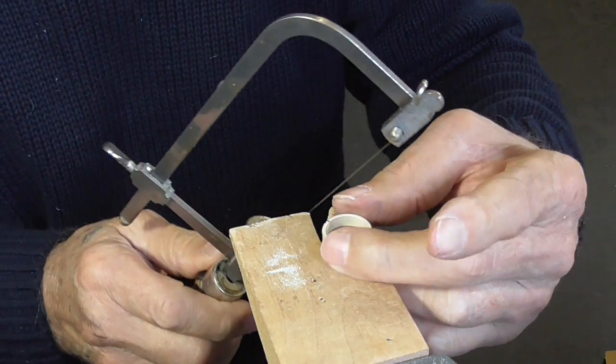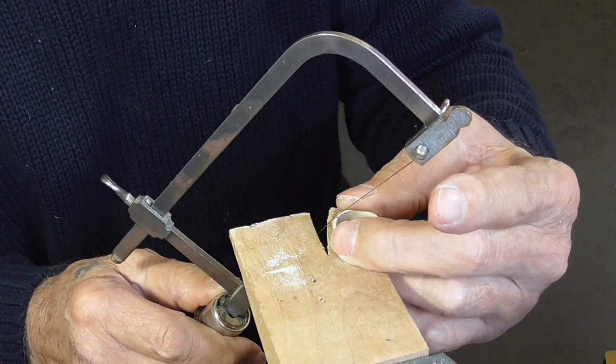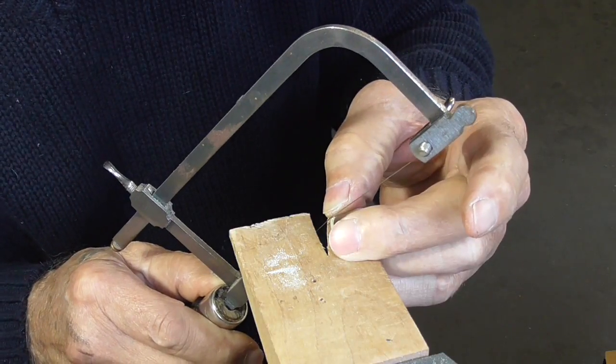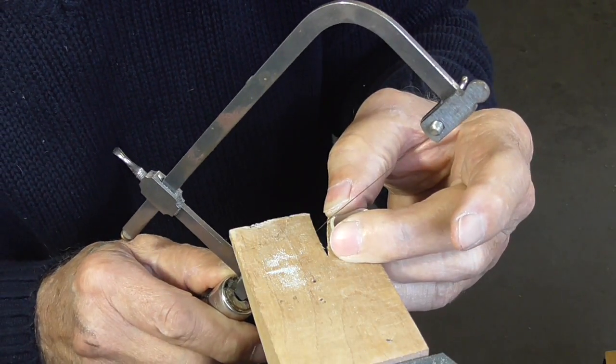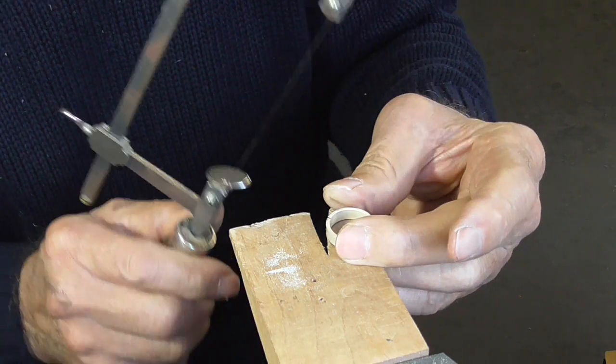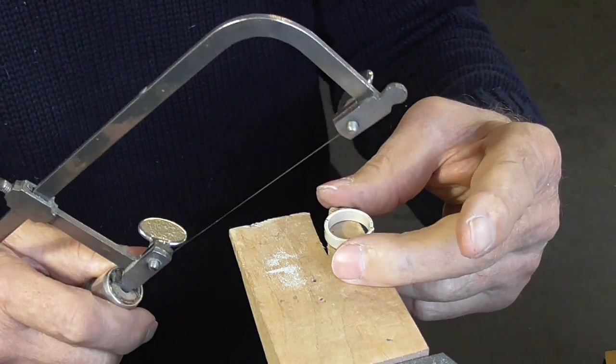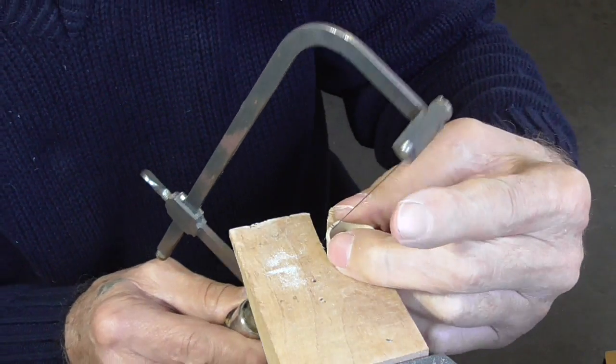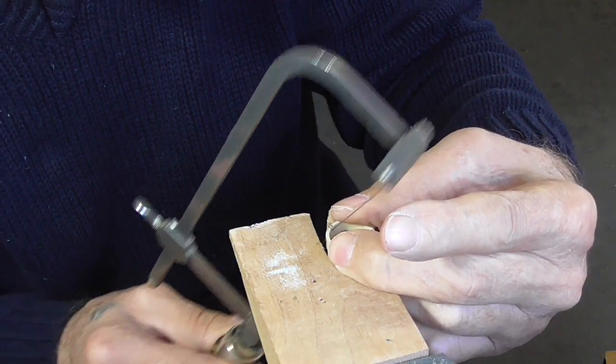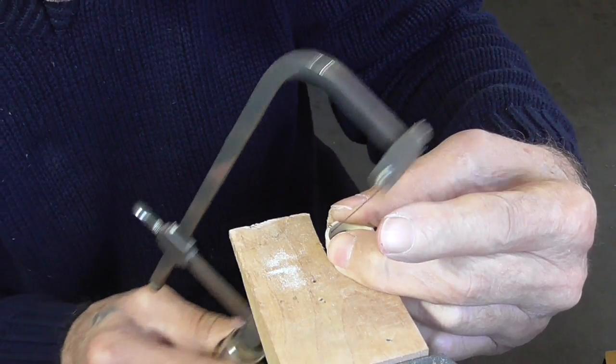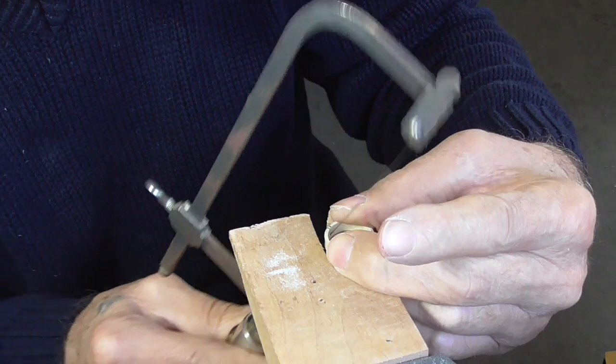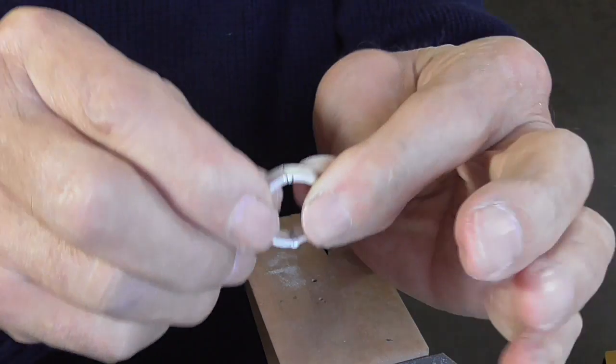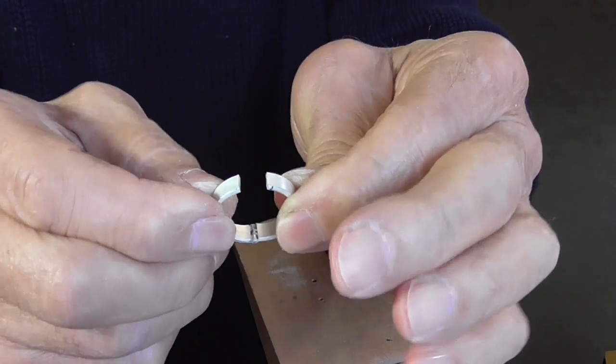And we'll saw at a 45 degree angle. Just perfectly follow the line, keeping the blade as straight as possible. Take your time, follow the line as best you can. And then we'll have our ring that opens up on the hinge.